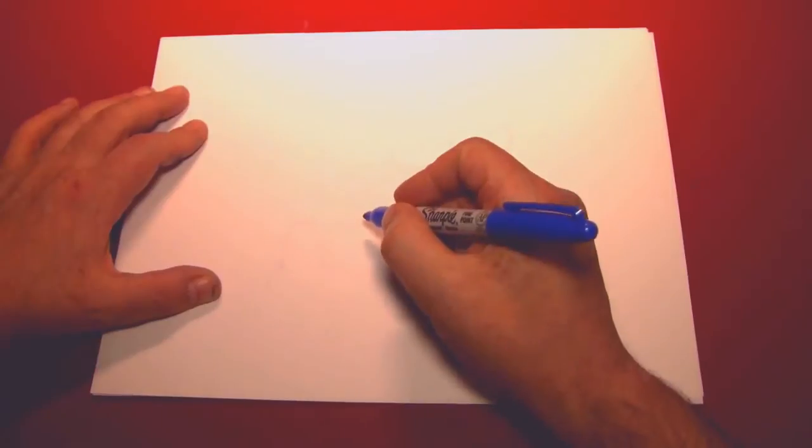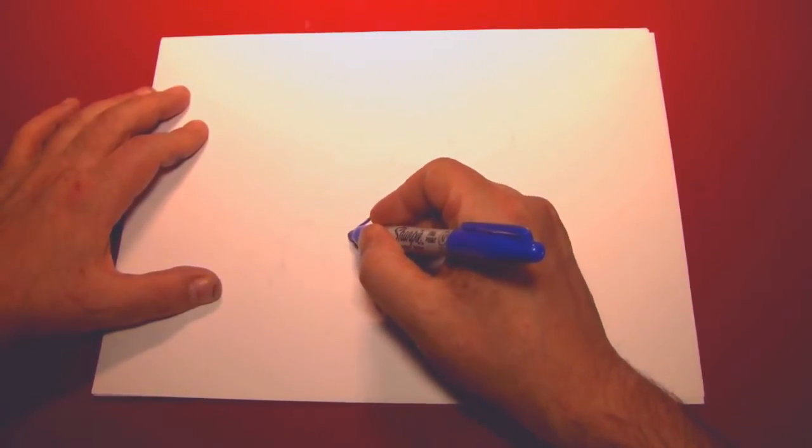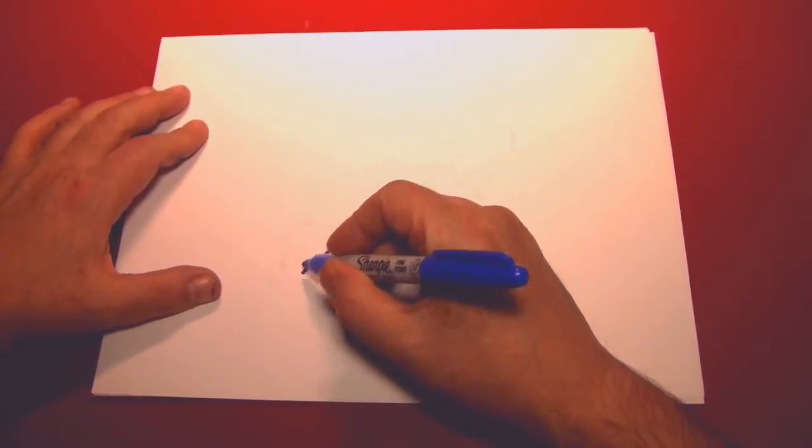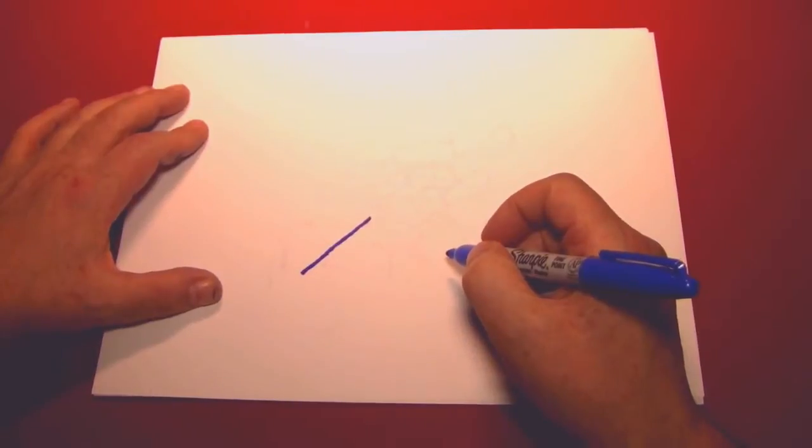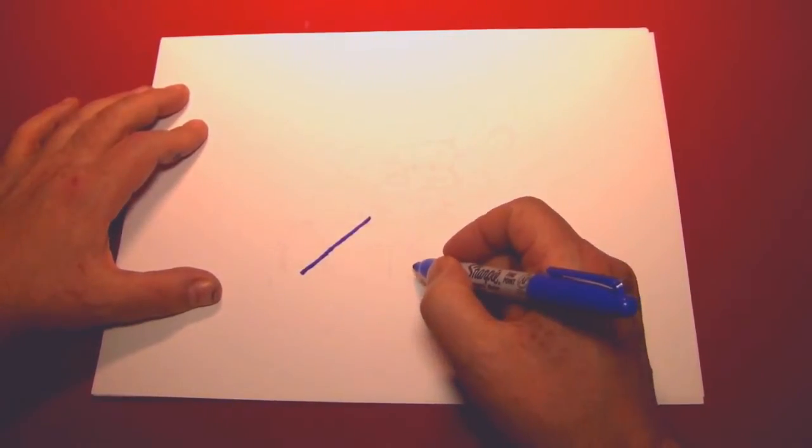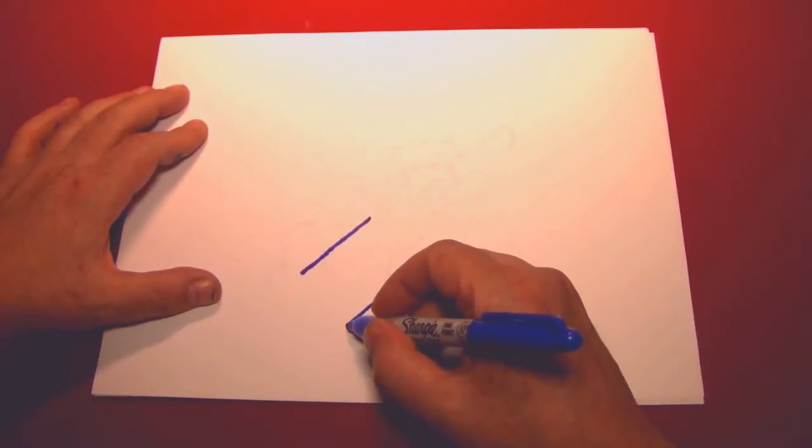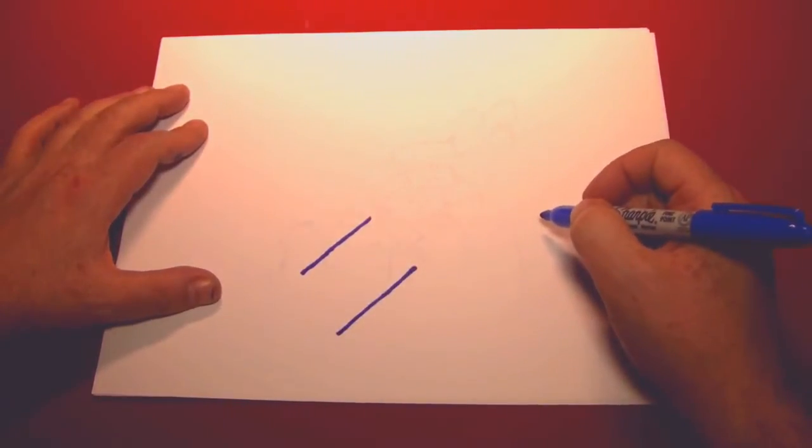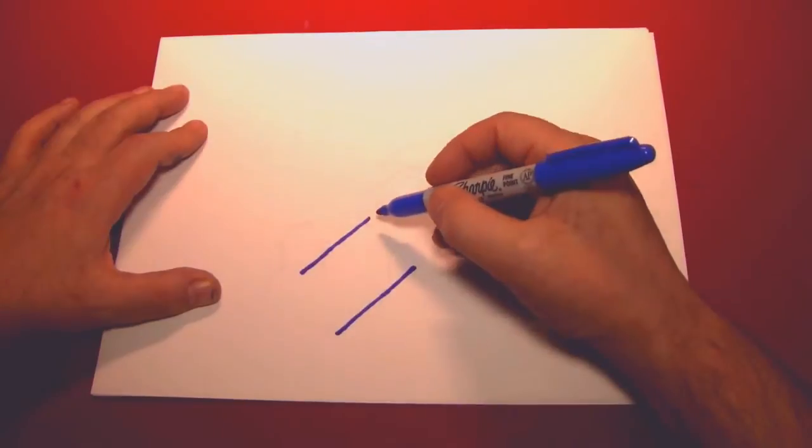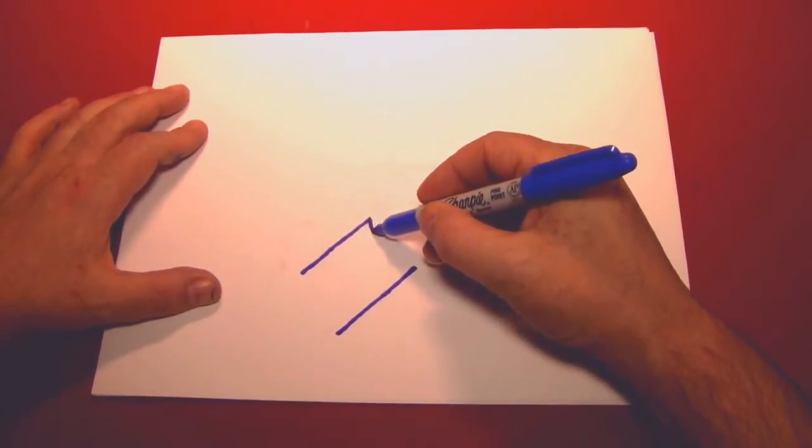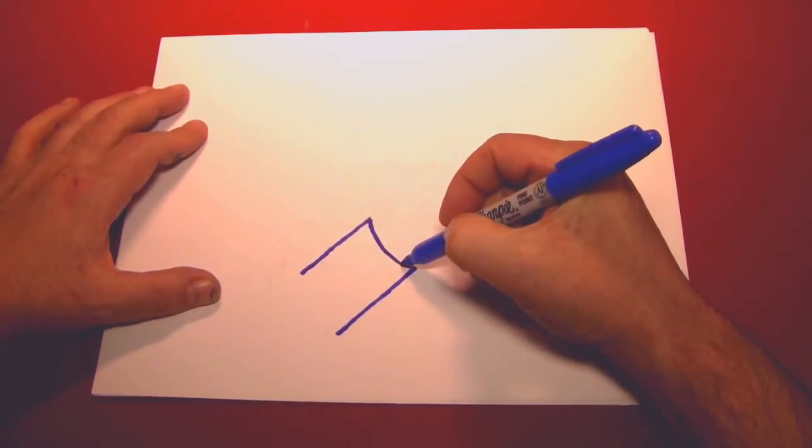Now I like to get started drawing hands by drawing the sleeve of the shirt that the hand is coming out of. We'll start by making a diagonal line there and then another one a little bit below like that. Connect this end with a very slightly curved line like this.